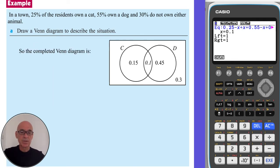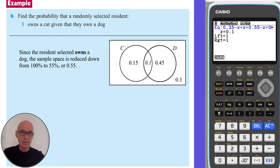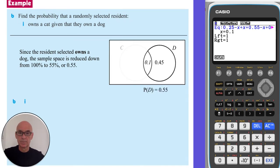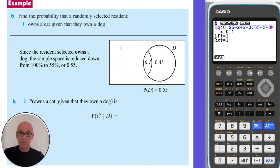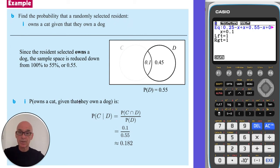So our completed Venn diagram looks like this. We're asked to calculate the probability that a randomly selected resident owns a cat, given that they own a dog. Since the resident owns a dog, the sample space reduces from 100% down to the 55%, so 0.55. The probability of owning a cat given they own a dog equals the intersection of cats and dogs — the probability of owning both — divided by dogs, which is 0.1 out of 0.55, equal to 0.182.